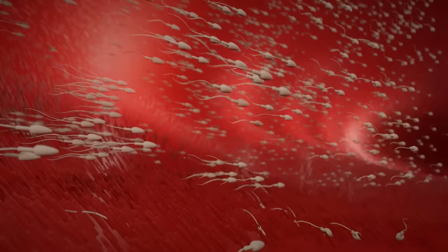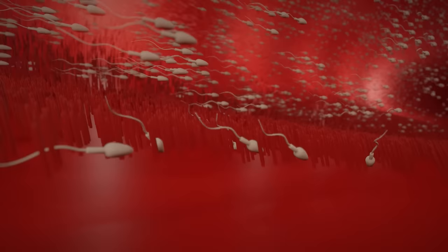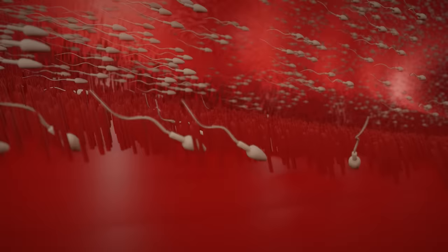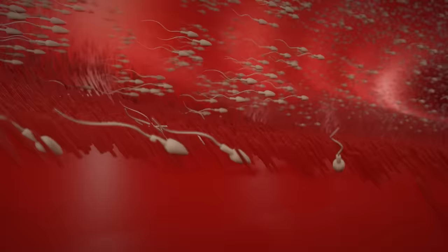Meanwhile, small cilia push the egg towards the uterus, so it continues on its path. Sperm must seek that movement to reach the egg. However, some sperm become trapped in the cilia and die during this part of the journey.